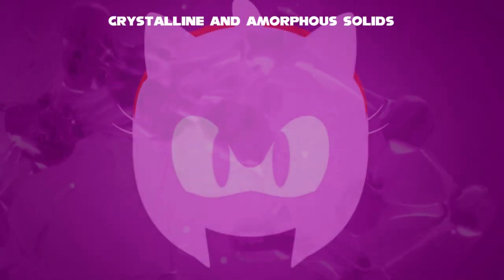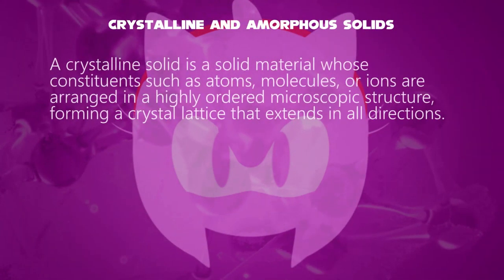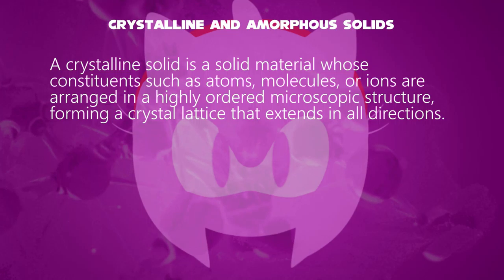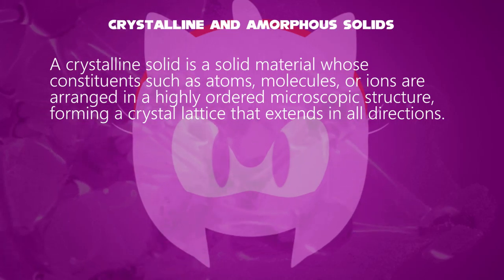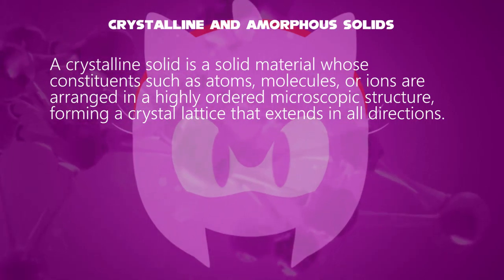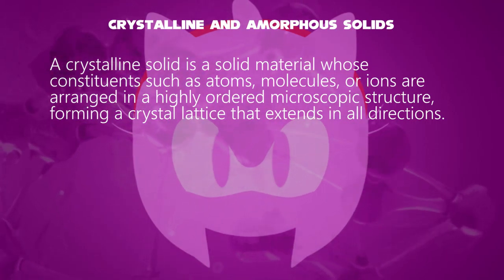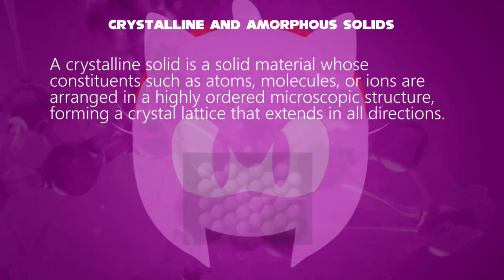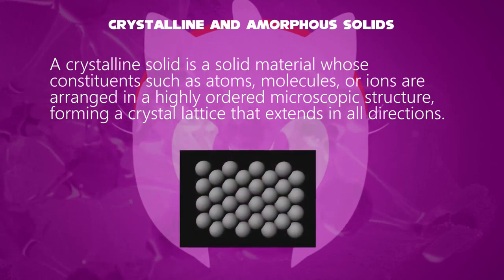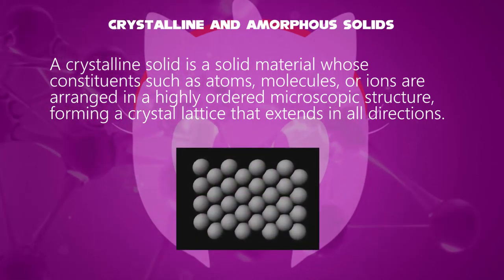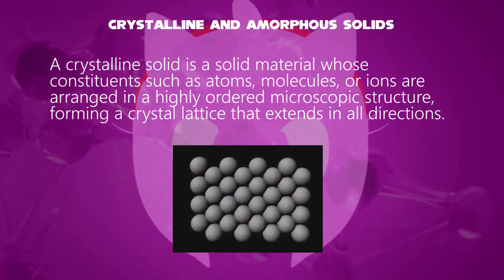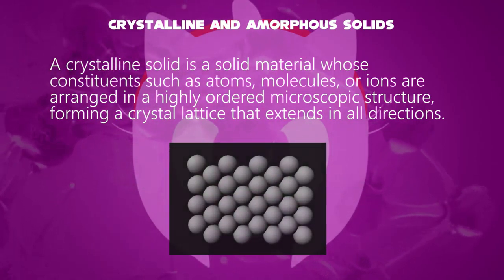First, to talk about crystalline. A crystalline solid is a solid material where atoms are arranged in a highly ordered microscopic structure, forming a crystal lattice that extends in all directions.